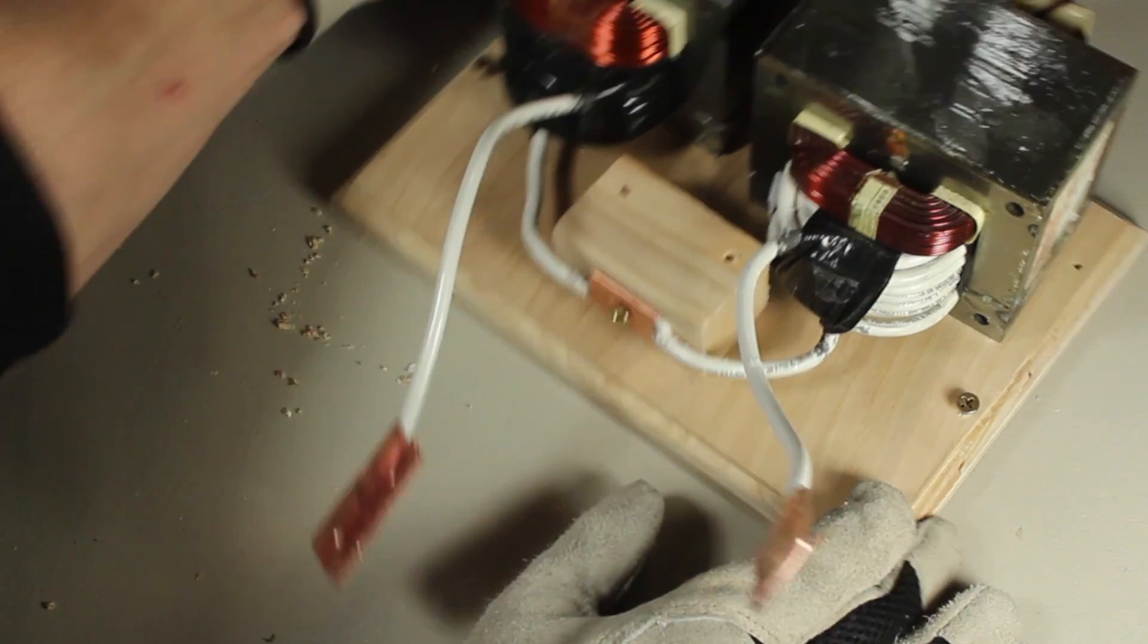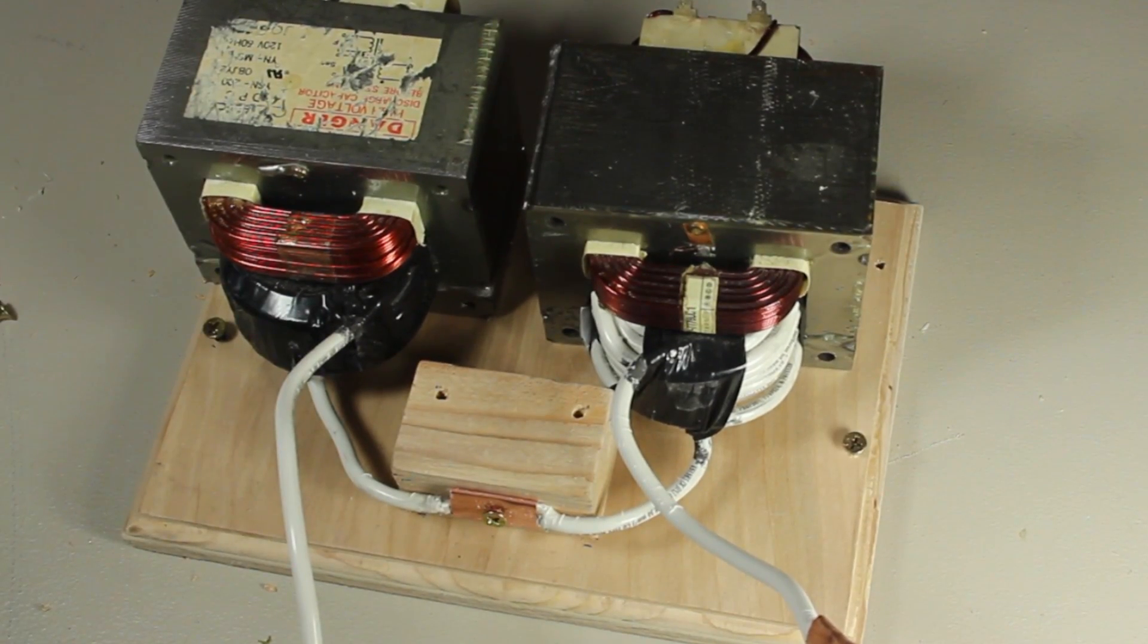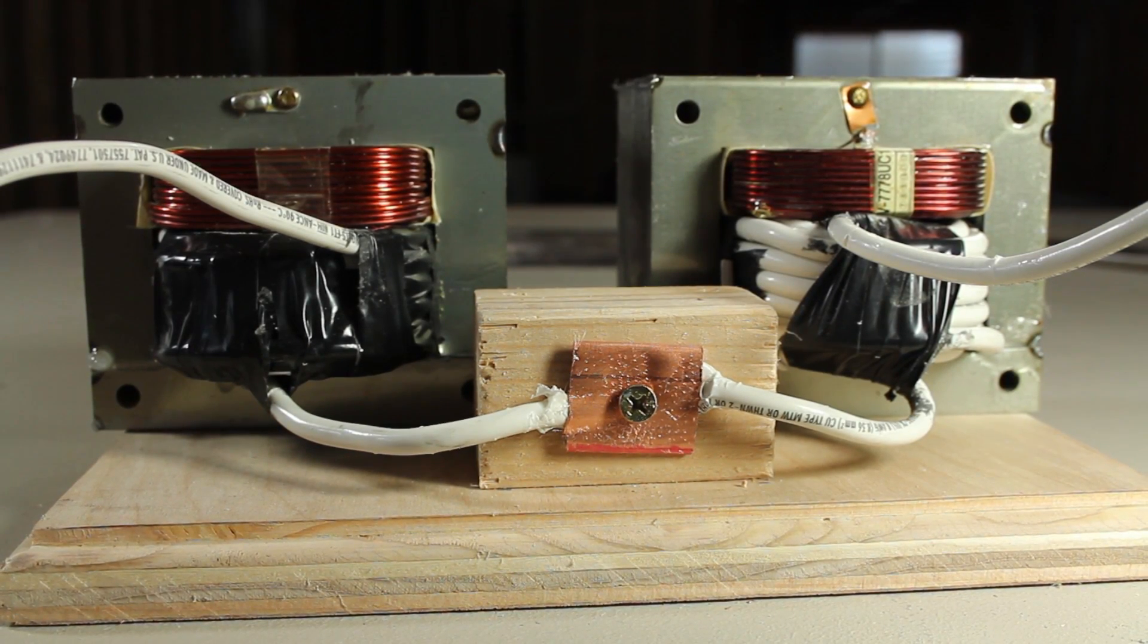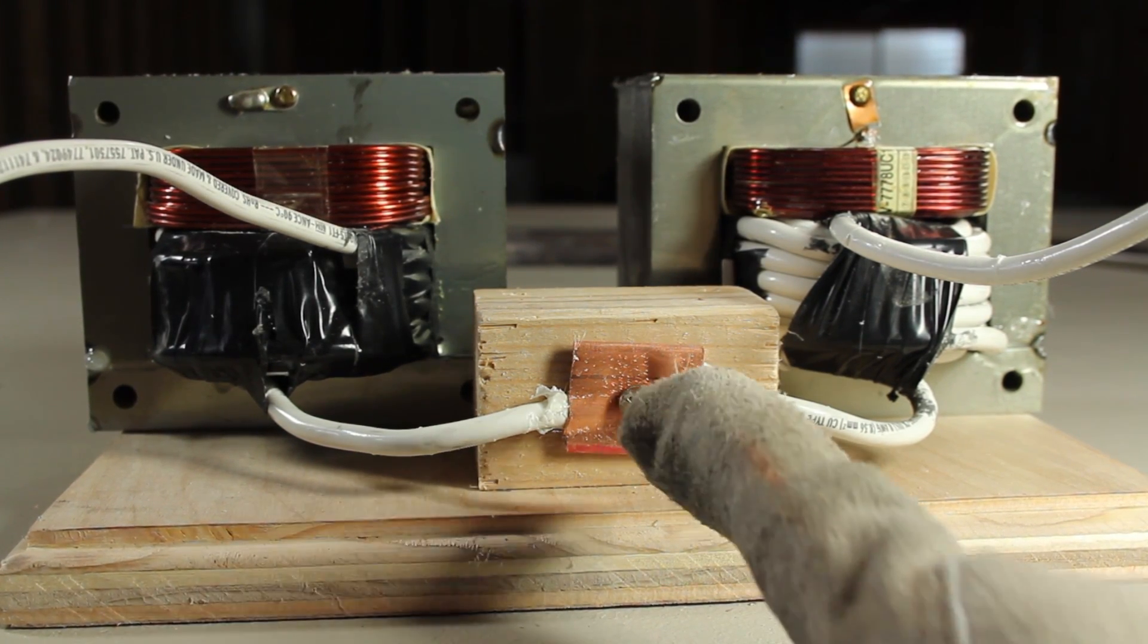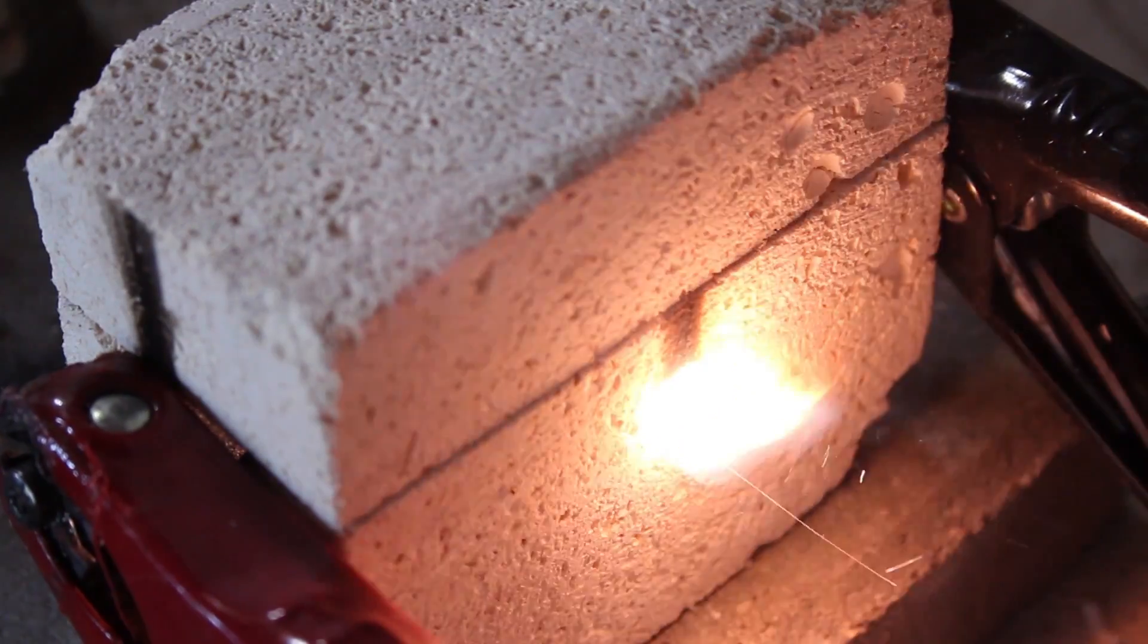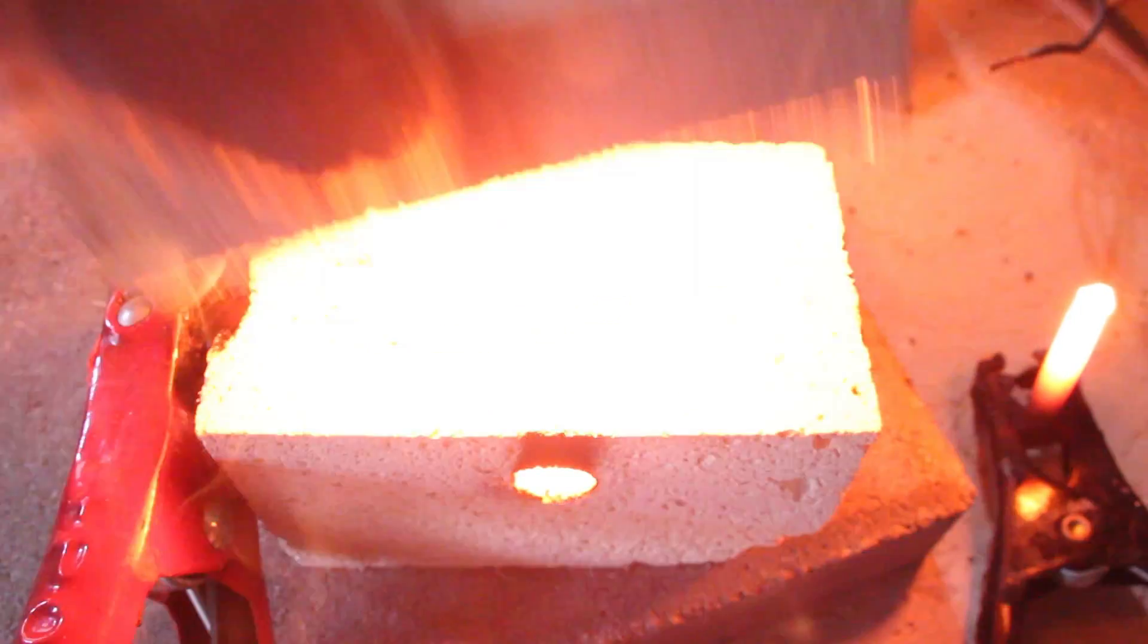We've got our lugs crimped on the ends of the secondary coils, so let's mount the transformers on the base. You've probably noticed that I cut the cable in the middle, and crimped them to a common lug in the center. This is because I wanted the option to center tap the transformers to power other devices, like an electrical arc furnace. Look for how to make that in a different project.